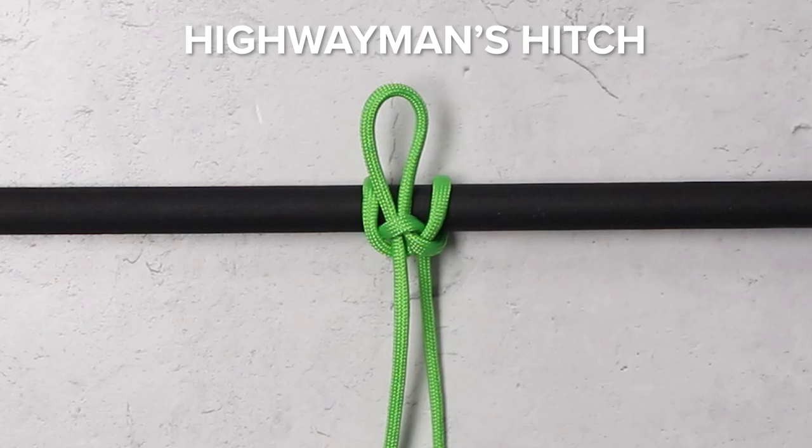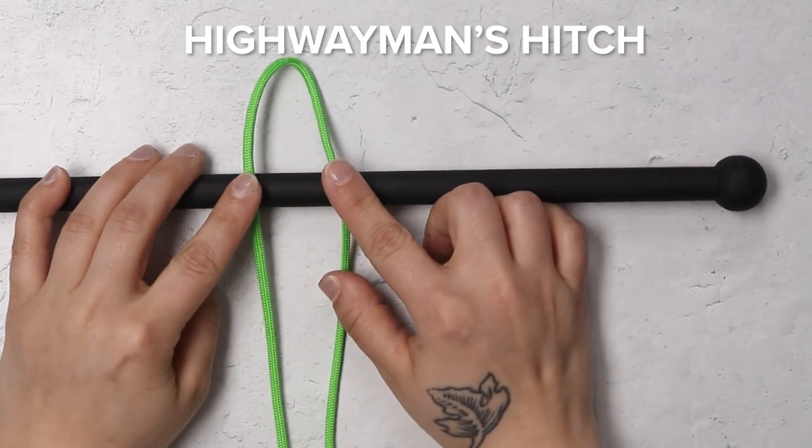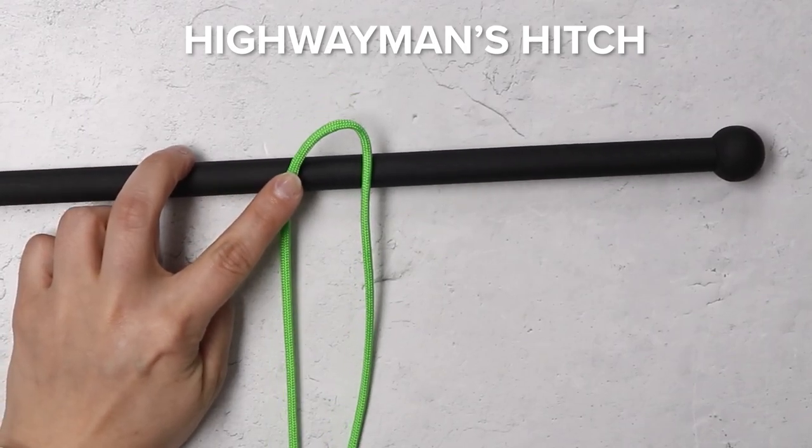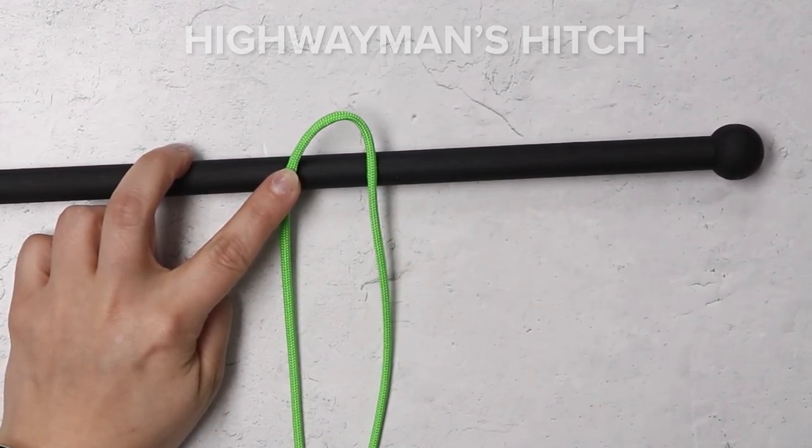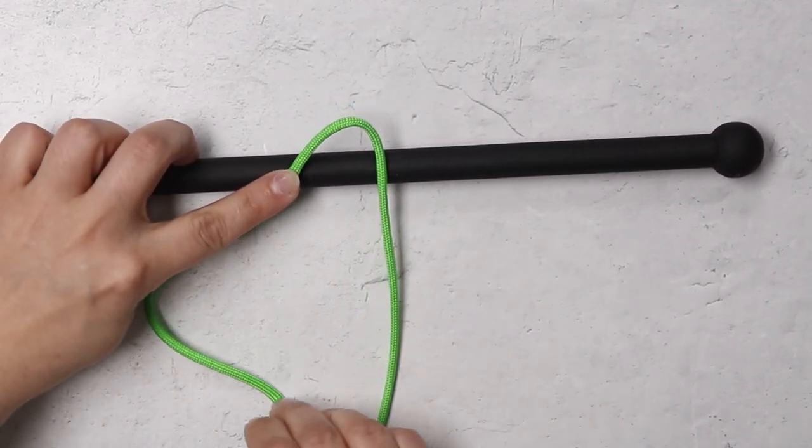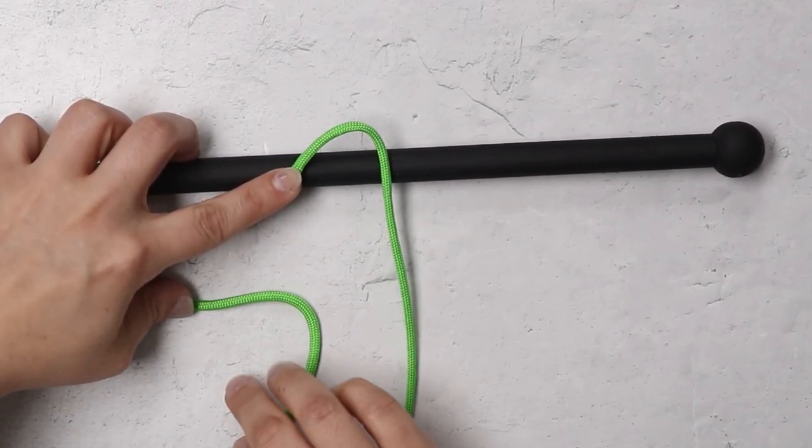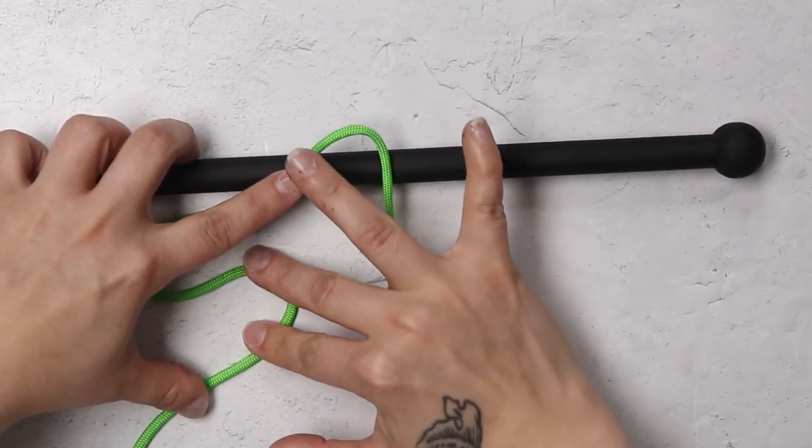Next step is the highwayman's hitch. To start your highwayman's hitch, you want to make a bite right in the middle of your cord and you'll be placing that bite right over the top of your item that you'll be hitching to. In this case, my dowel.